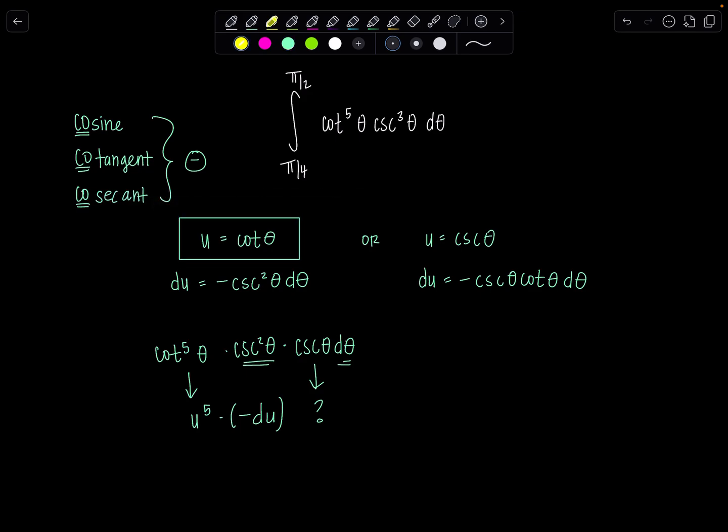So that option will not work. Abort mission. And then you say, well, obviously the other one has to work. Let's hope so. If I let u be cosecant theta, for du I need one power of cosecant and one power of cotangent. So let me pluck them off and get ready. Let's do some prep work before we jump in and make the u-sub.